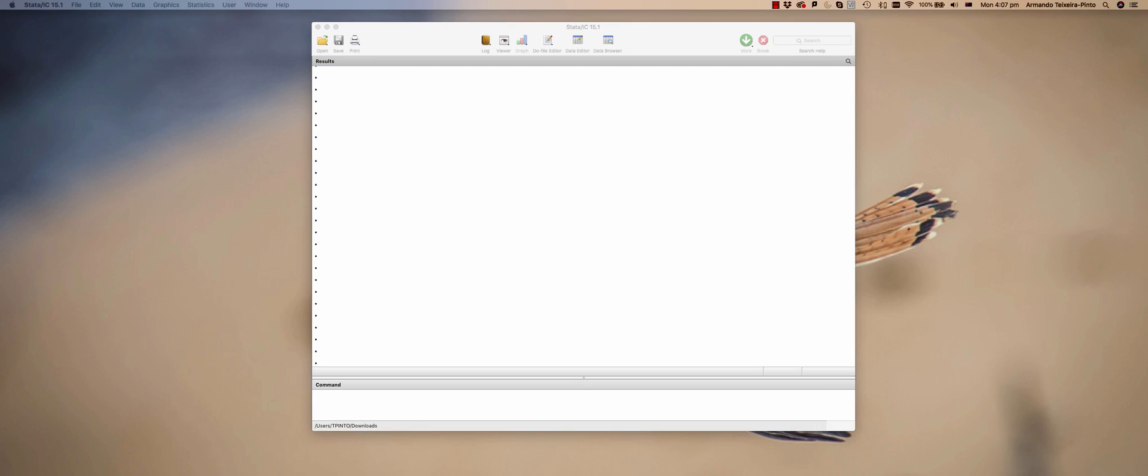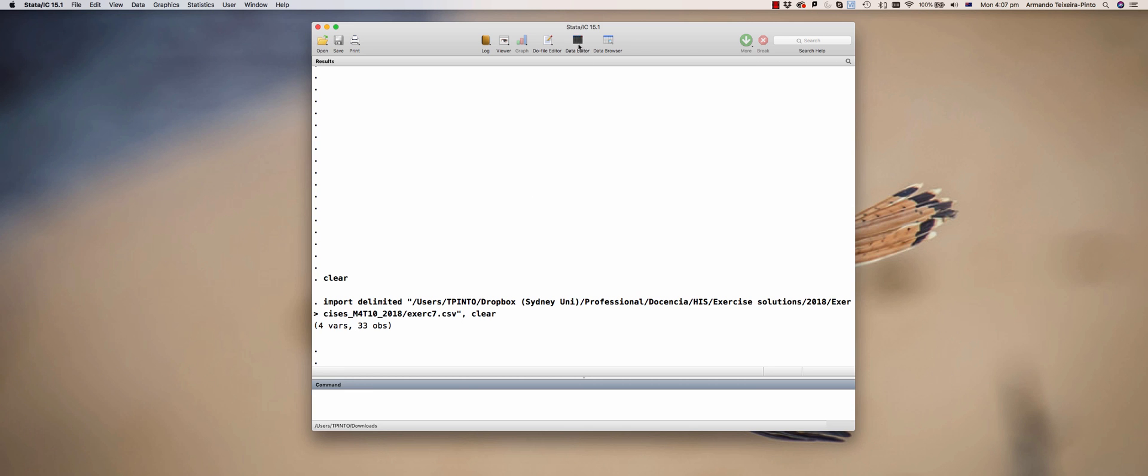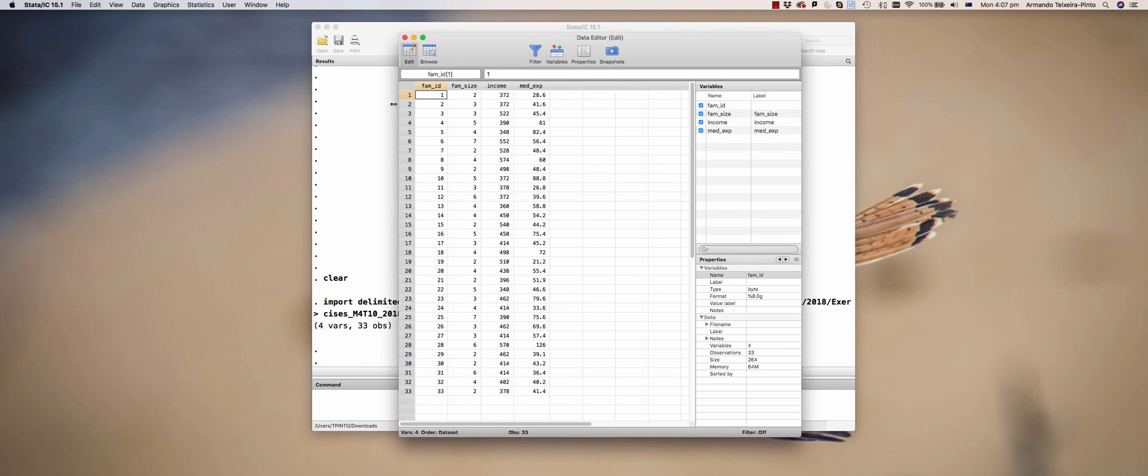I'm going to start by reading the dataset. Let's open the dataset. As you can see, you have family ID, family size - we have 33 families out of 600 in the community, and the family size out of the 2700 individuals. Then we have the income that we're not going to use for this exercise, and medical expenses, which is the variable of interest.